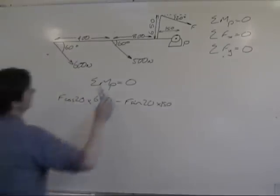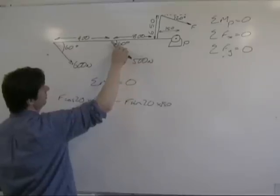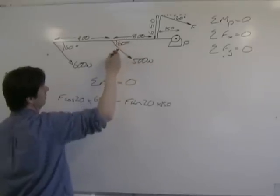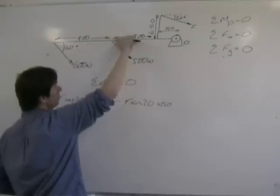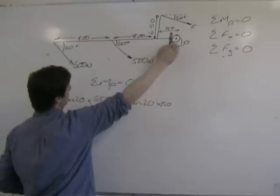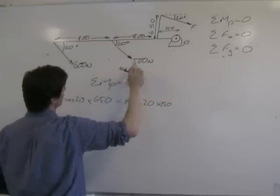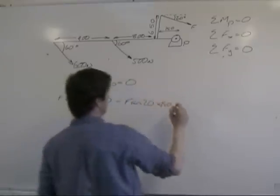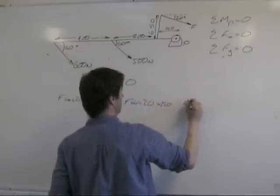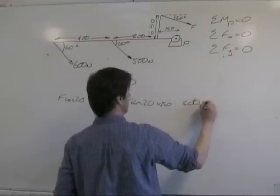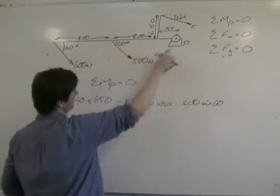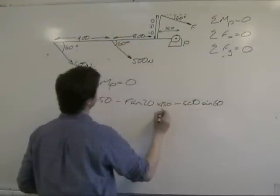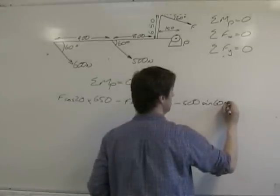Then we have this force here. It has a y component which causes a moment and an x component. The x component has no distance, so it causes no moment about that pivot. The y component of the 500 is 500 sin 60. It's causing it to spin anti-clockwise, so it's negative, and the distance is 950.